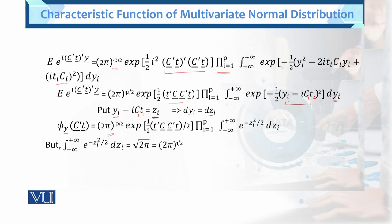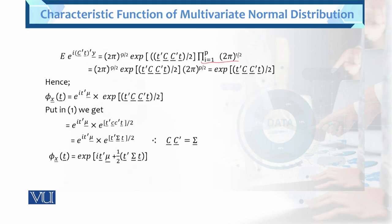We know this integral equals the square root of 2 pi, which we write as 2 pi to the power 1 by 2. Entering this, the expected value becomes 2 pi to the minus p by 2 exponential of this term. Since C C prime equals sigma, and 2 pi to the 1 by 2 appears p times in the product, we write it as 2 pi raised to p by 2 (positive). The positive p by 2 and negative p by 2 cancel, leaving the remaining part.